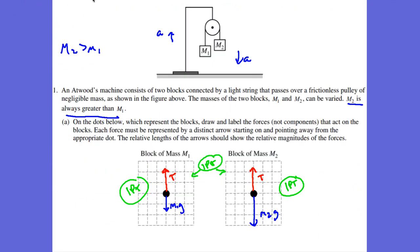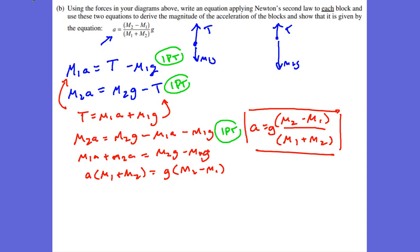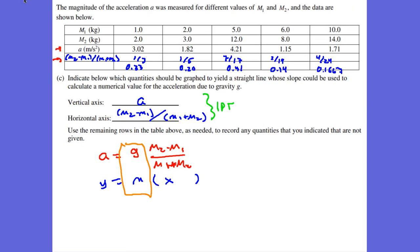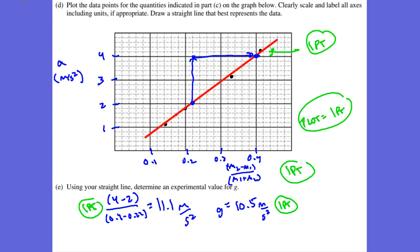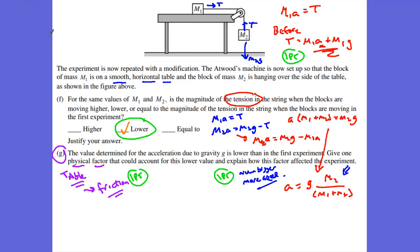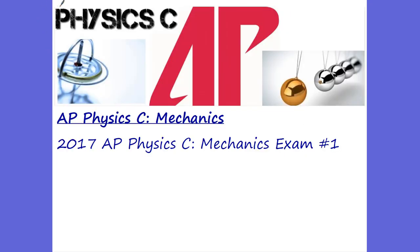The total point breakdown: Part A is 3 points, Part B is 3 (total 6), Part C is 1 (total 7), Part D is 3 (total 10), Part E is 2 (total 12), Part F is 2 (total 14), Part G is 1 — that's 15 points total. This is the 2017 AP Physics C Mechanics Exam, Problem Number One. See you guys, bye.